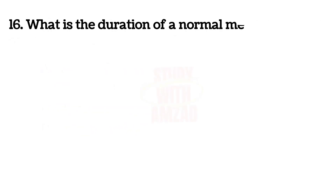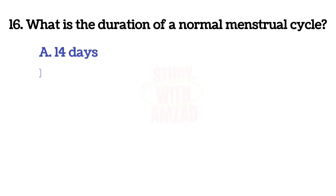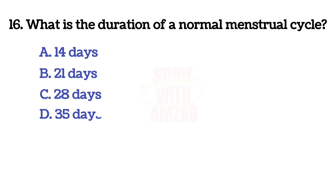What is the duration of a normal menstrual cycle? The answer is C: 28 days.